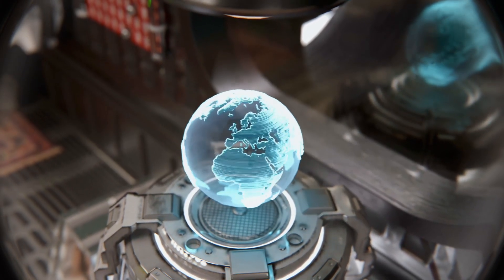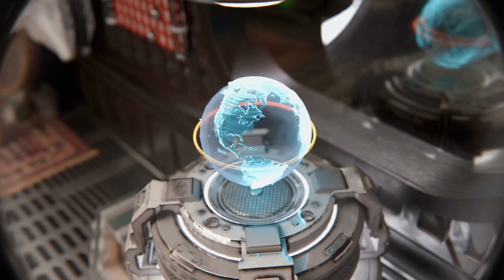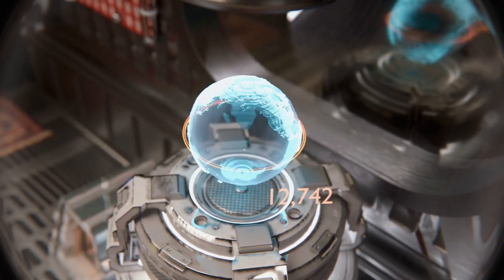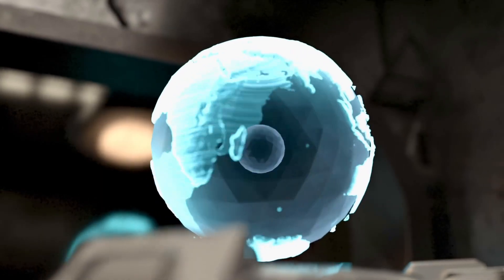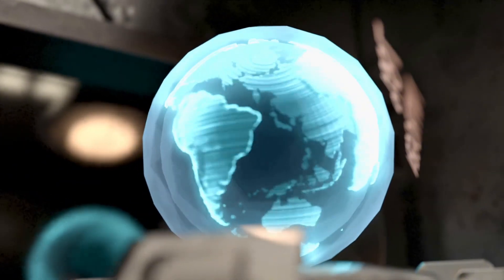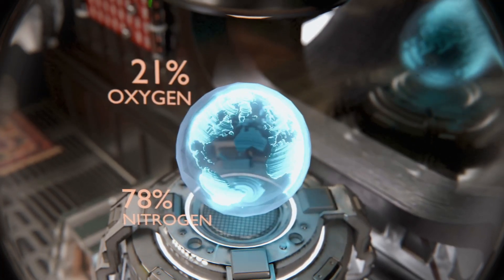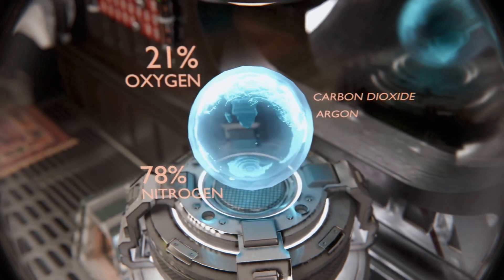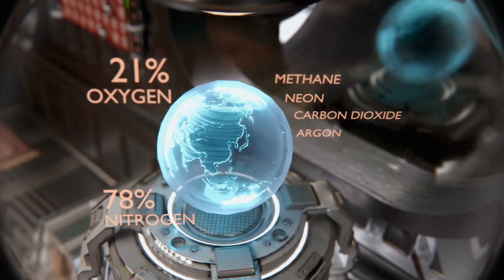Here is a quick brief on Sol 3, locally known as Earth. Sol 3 has a diameter of 12,742 clicks. Its atmosphere consists of 78% nitrogen, 21% oxygen, and trace elements of argon, carbon dioxide, neon and methane.